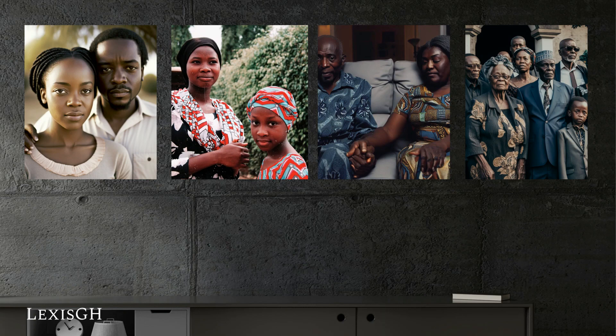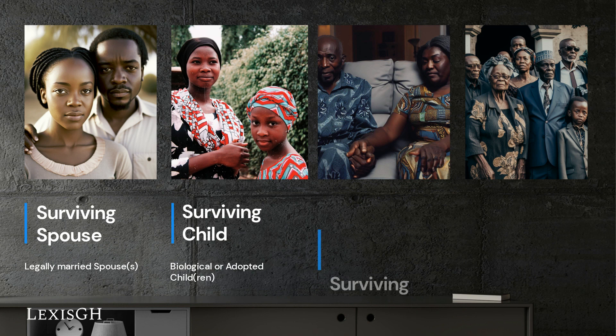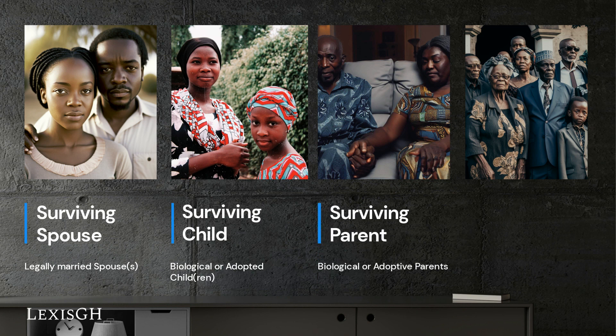These are the surviving spouse — the legally married spouse of the deceased — the surviving child — the biological or adopted child of the deceased — the surviving parent — the biological or adoptive parents of the deceased — and the extended family of the deceased.